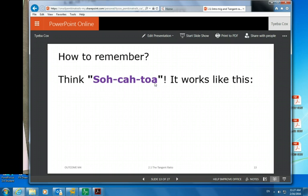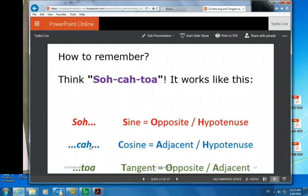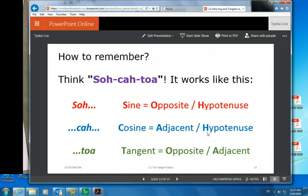So a way to remember is SOHCAHTOA, and it works like this. Sine is opposite over hypotenuse. Cosine is adjacent over hypotenuse. Tangent is opposite over adjacent. So that's how we remember it.